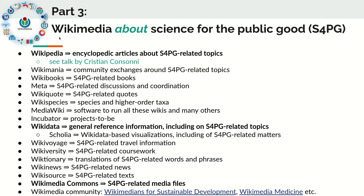In each of these information channels, you can find information that's relevant to Science for the Public Good. Christian will highlight this on the example of Wikipedia, so I'll not provide too much detail. Just mention that there is a range of sub-communities within the Wikimedia community that deals with specific aspects of this — for instance, there is a group called Wikimedians for Sustainable Development, there is Wikimedia Medicine, and there are lots of others that deal with specific kinds of information.